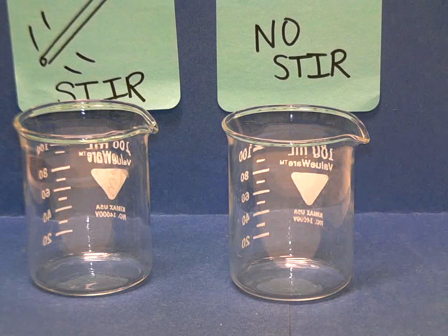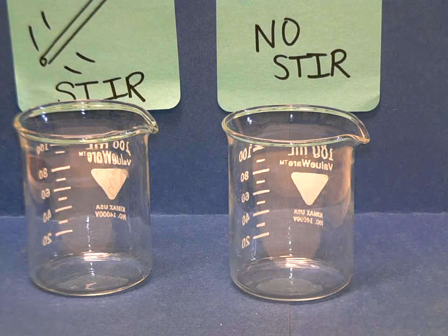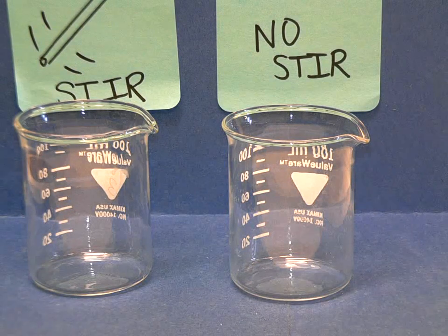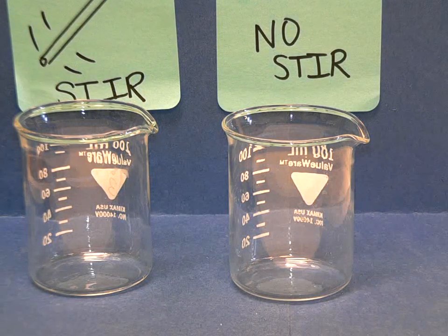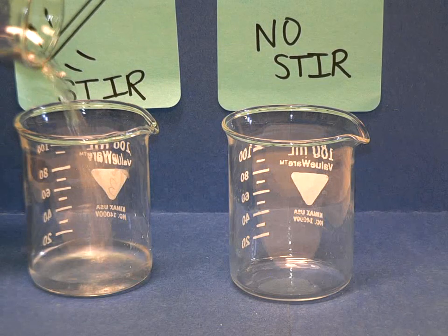Now we're going to see the effect of agitation or stirring on the rate of solution formation. To start out, I'm going to add 100 milliliters of water to each of our beakers.